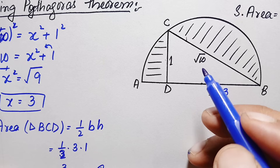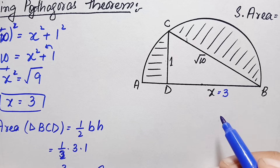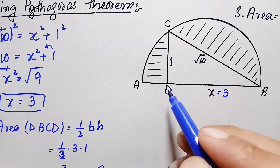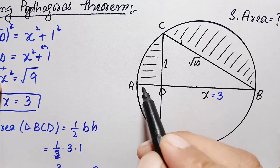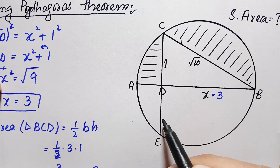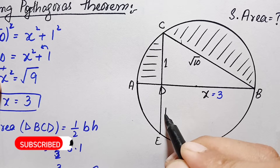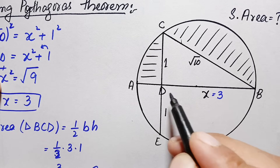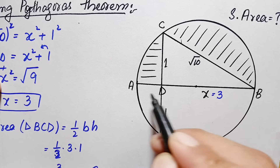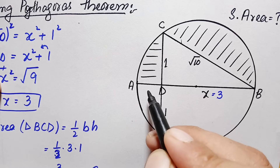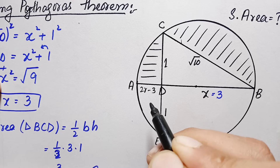Our next target is to find the area of the semicircle. To do this, we complete the semicircle into a full circle and extend line segment CD, calling the new point E. By symmetry, since CD is 1 unit, DE is also 1 unit. Looking at line segment AB: DB is 3 units, and AB is the diameter of the circle, which is 2r, so the length AD equals 2r minus 3 units.